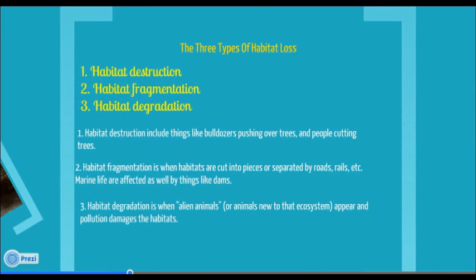Number three is habitat degradation. Habitat degradation is when alien animals that are new to the ecosystem and that don't belong there appear and start destroying the food chain. Another reason is pollution and when that damages the habitat.